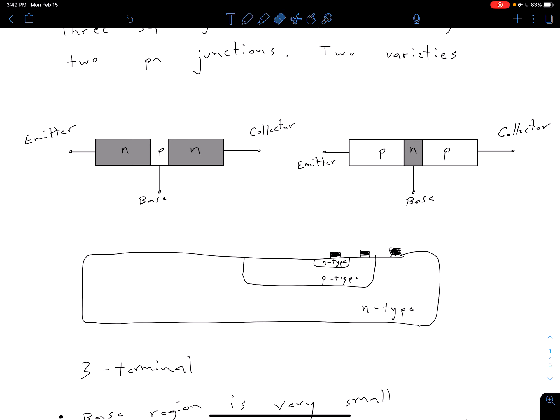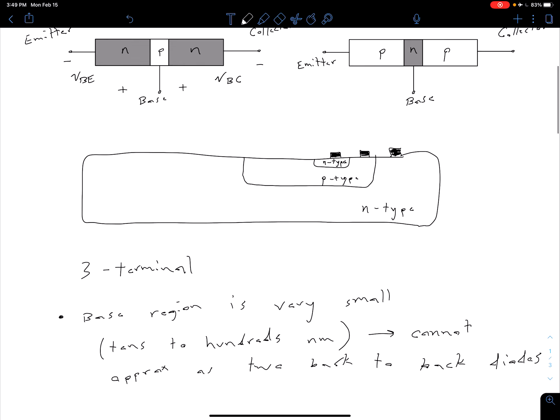Let's look at our NPN transistor and I'm going to define some voltages. In general with our NPN, we're going to be using our base emitter voltage a lot, VBE, defined as positive at the base, negative at the emitter. We'll also be dealing with our base collector voltage, VBC, again positive at the base, negative at the collector.